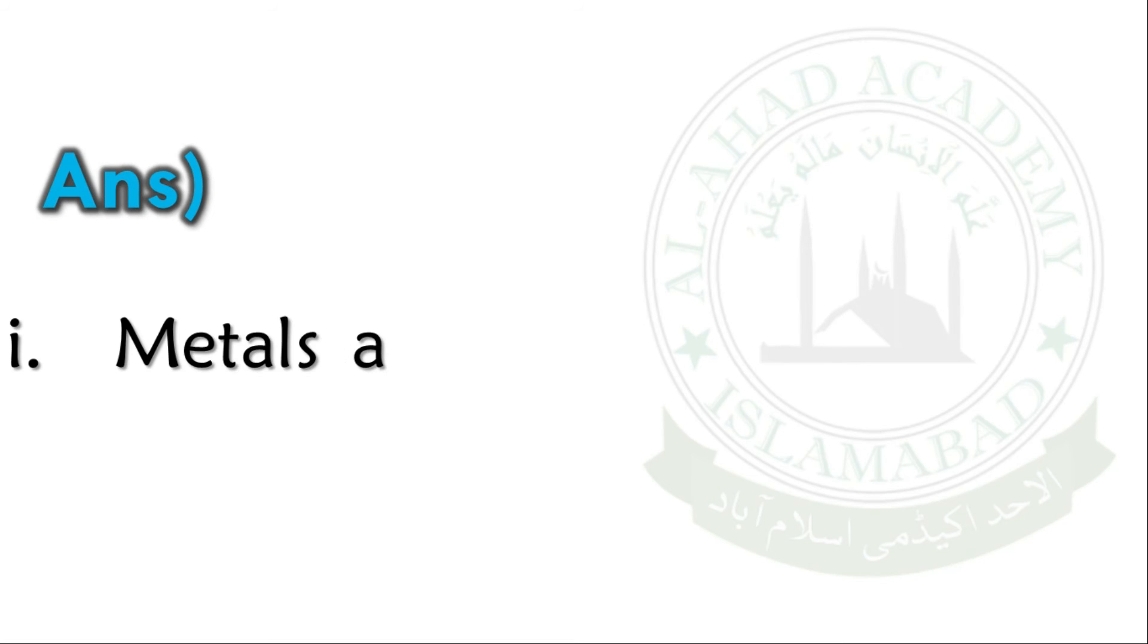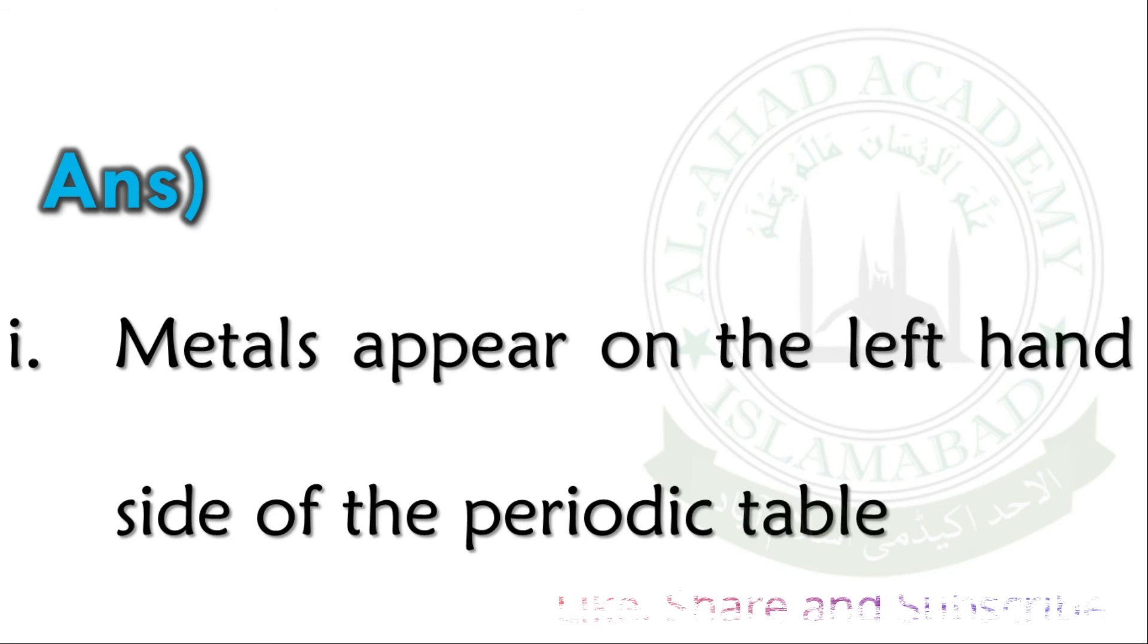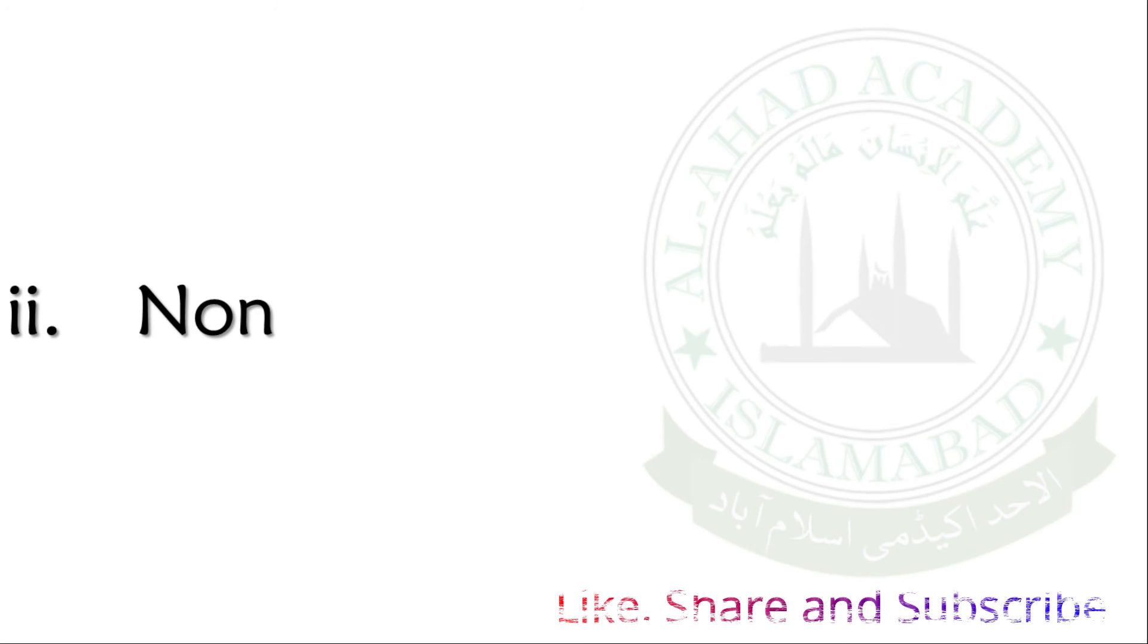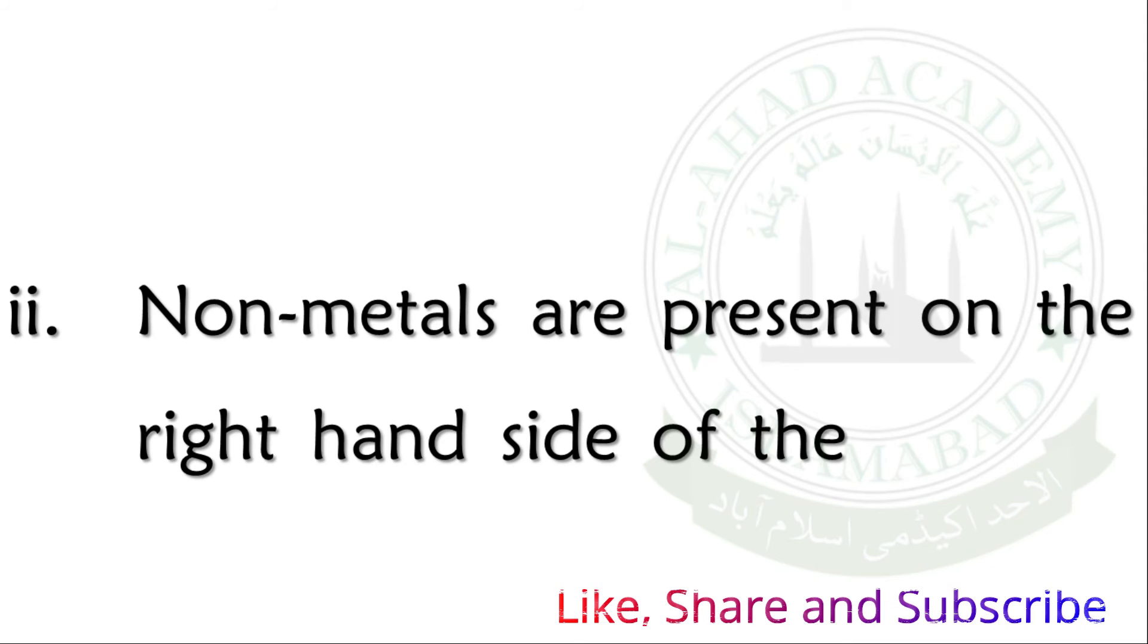Answer. Metals appear on the left hand side of the periodic table. Non-metals are present on the right hand side of the periodic table.